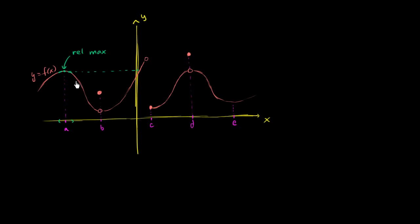Now what about this? If this was filled in, if we were continuous here, this would be pretty obviously a relative minimum point. But this does something interesting—it jumps up. So this right here is the value of f(b).